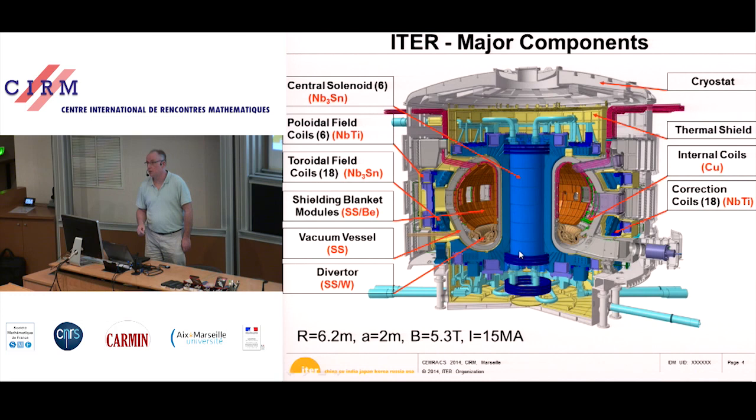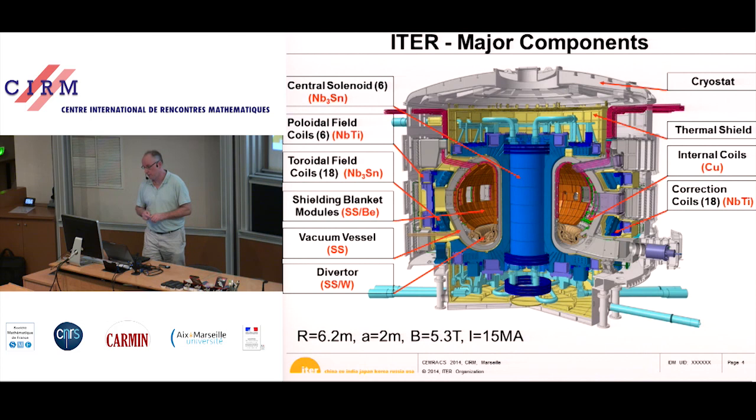I forgot the central solenoid, which is of course also a large coil — a coil that drives the current inside the plasma. The field of this coil is ramped up and down during the discharge, and it drives, by the transformer effect, the current inside the plasma, inducing a field inside the torus and creating a plasma.